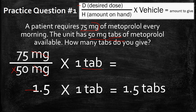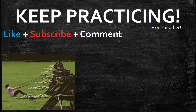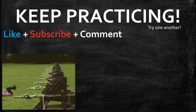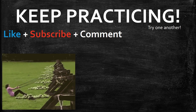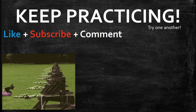If you want to back-check this, multiply your answer by the amount on hand, which is 50. If you did it right, you'll get back the original desired dose of 75 milligrams. So 1.5 multiplied by 50 gives you 75. Keep practicing — it doesn't come easy for a lot of people. Like, subscribe, comment, and try the next question.